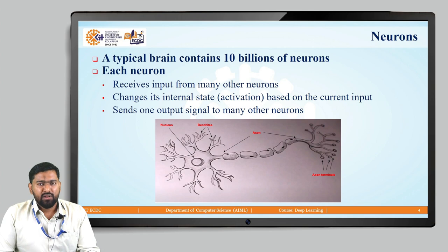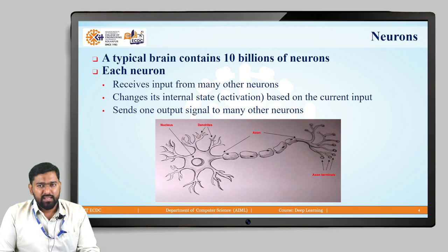You can see the figure of a neuron here. In that, we have the nucleus at the center part. Then there are dendrites, which are used to connect the output from other neurons. There are a lot of dendrites — it will receive output from other neurons, activate it, and pass it through the axon terminals to other neurons.